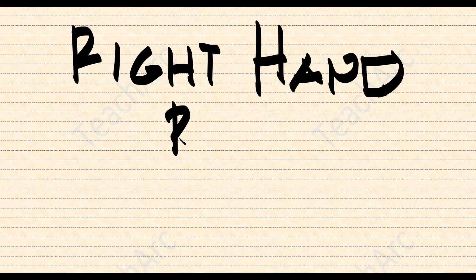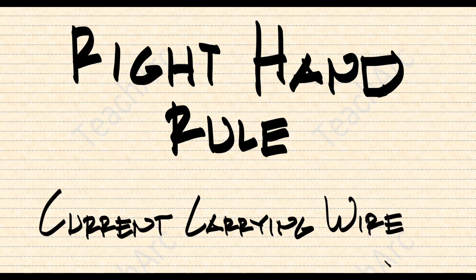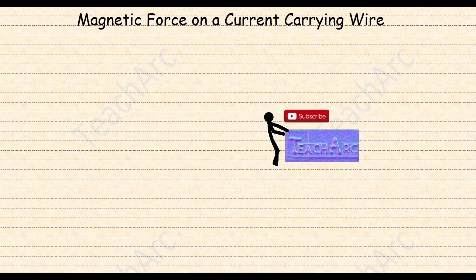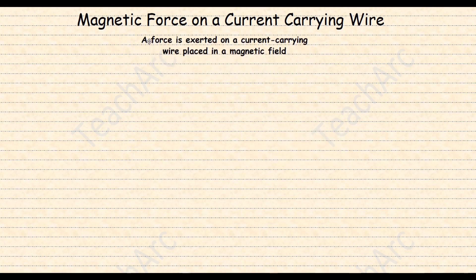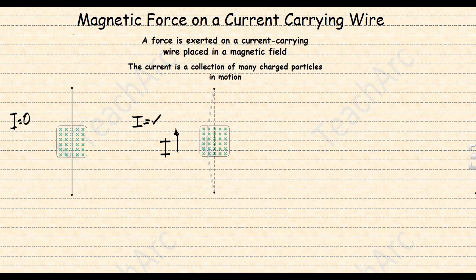The direction of the magnetic force on a current-carrying wire due to a magnetic field is well described using the right-hand rule. A force is exerted on a current-carrying wire placed in a magnetic field. The current is a collection of many charged particles in motion. If there is no current running through the wire, we get zero magnetic force. But if there is current, the wire will be deflected. The direction of the magnetic force depends on the direction of the current as well as the direction of the magnetic field.